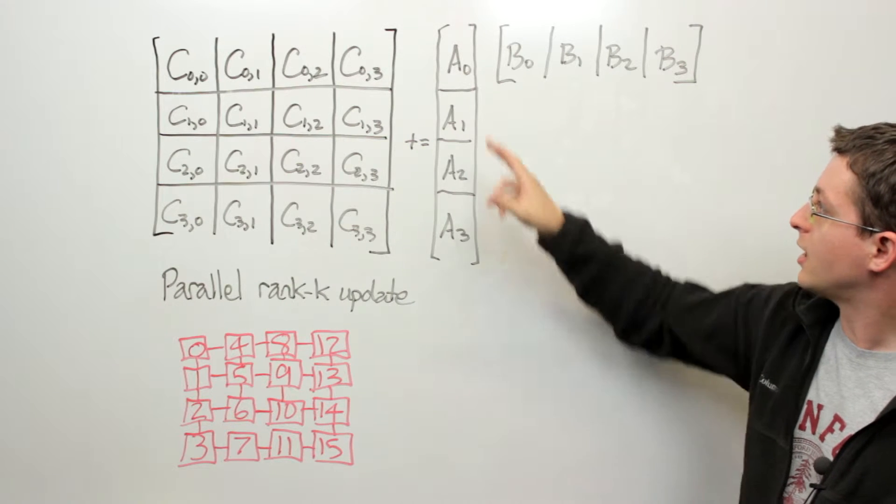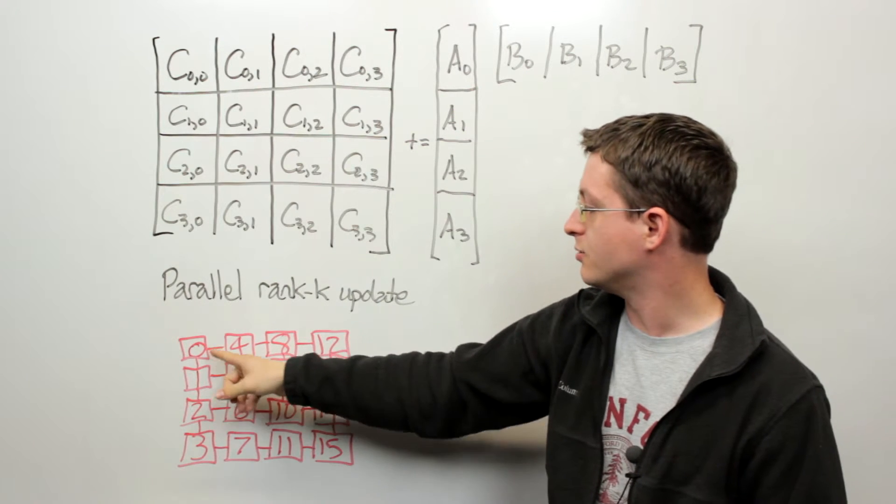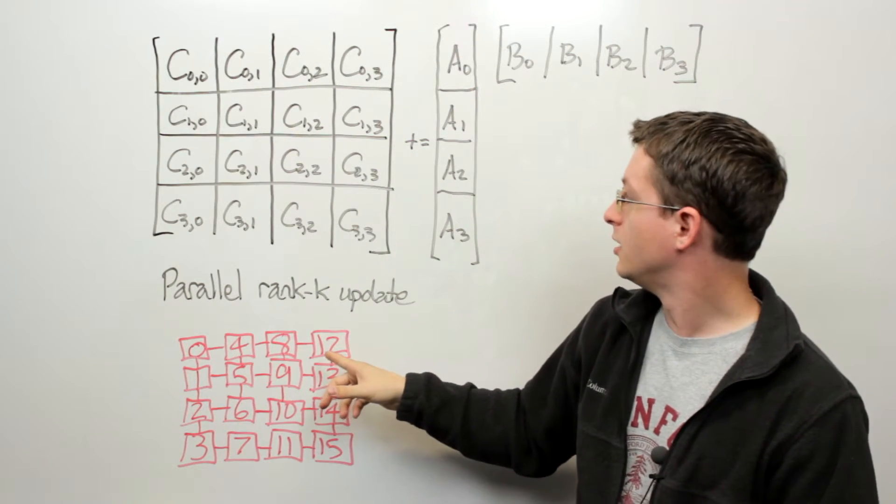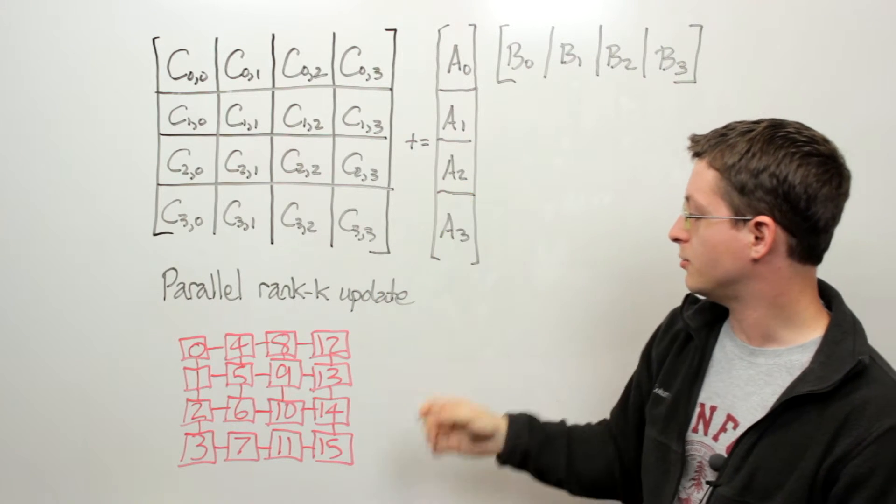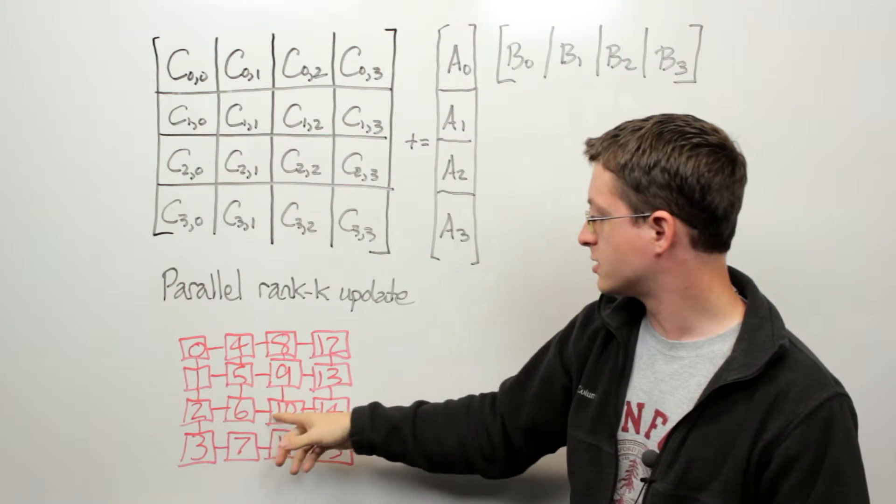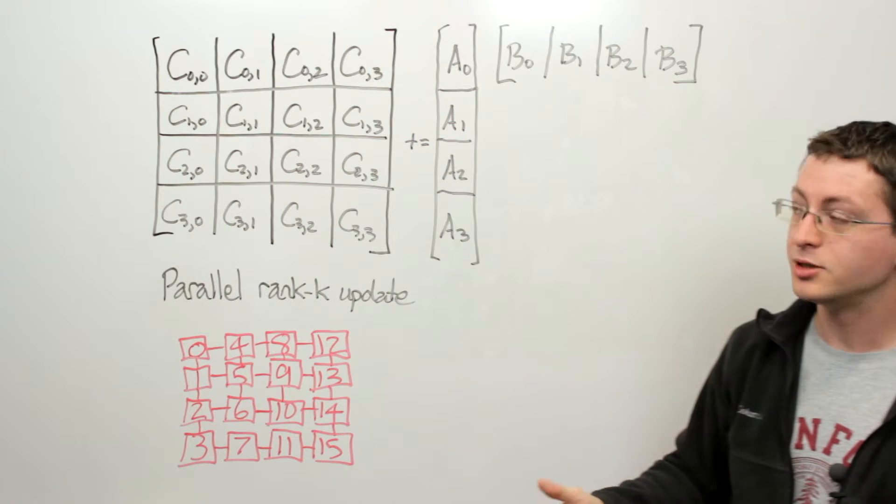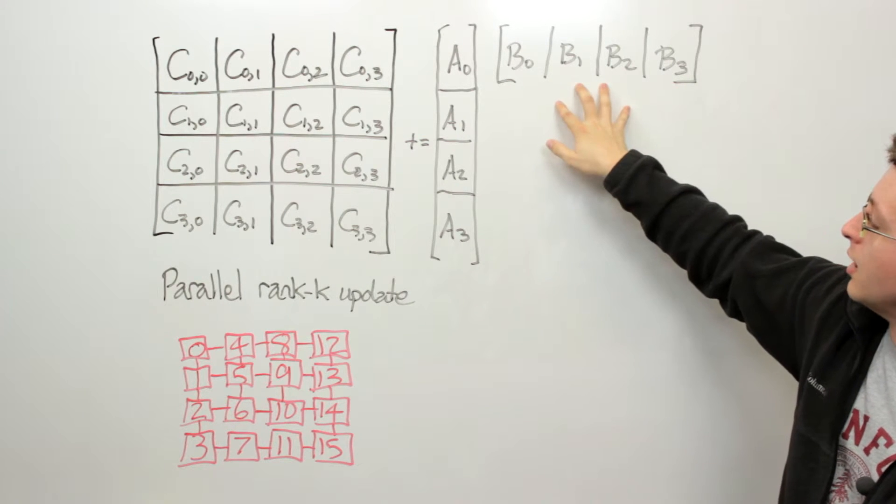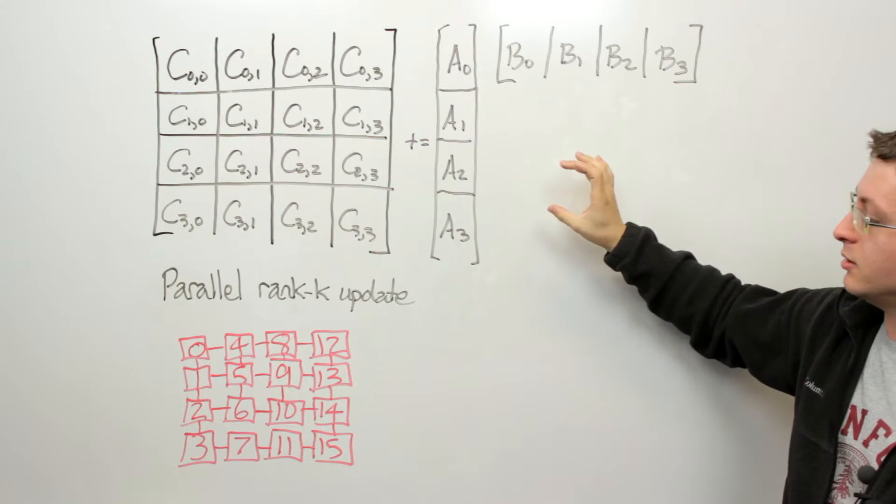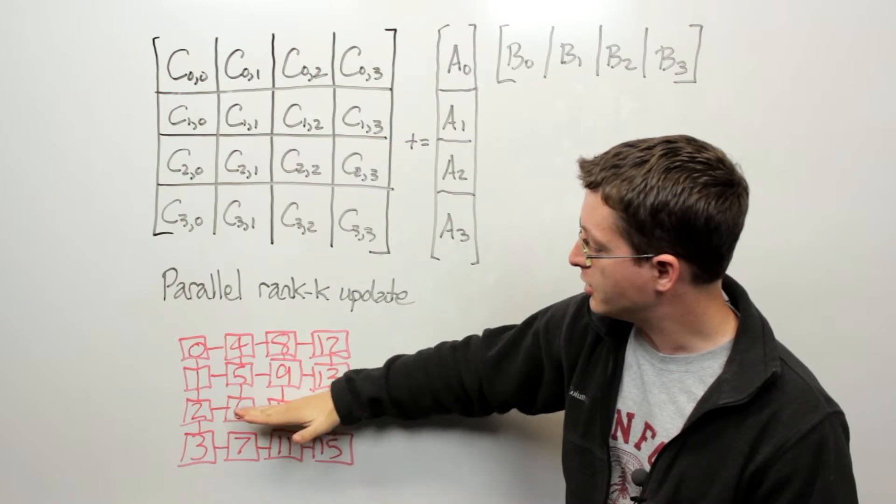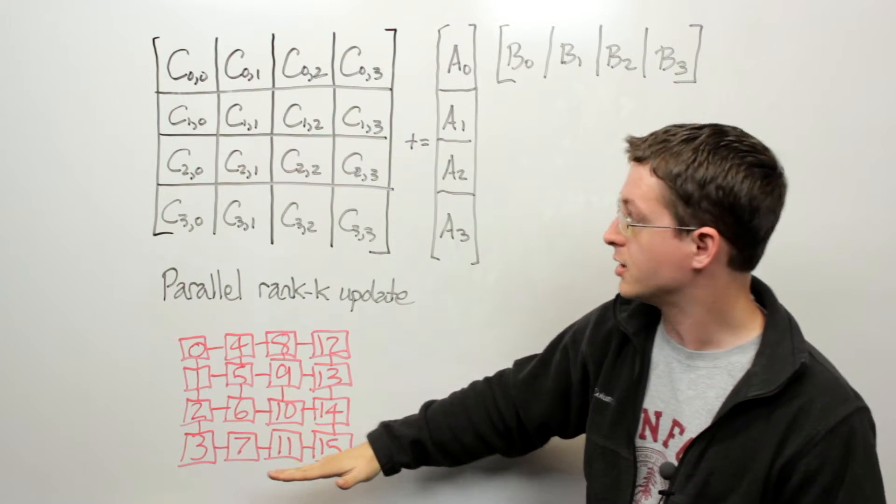For instance we would like A sub 0 owned by processes 0, 4, 8, and 12 and A2 owned by processes 2, 6, 10, and 14. Likewise we would like to think of having this matrix B distributed redundantly within each row of this two-dimensional process grid.